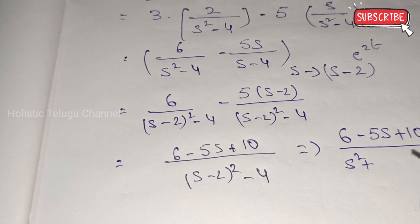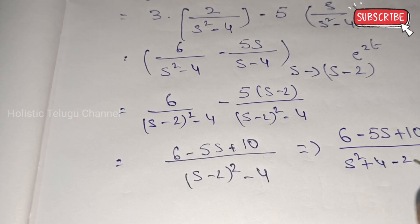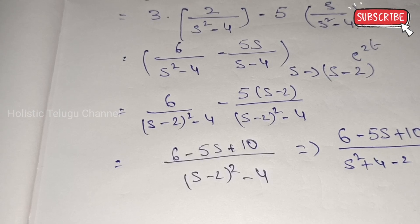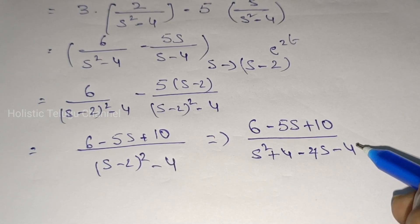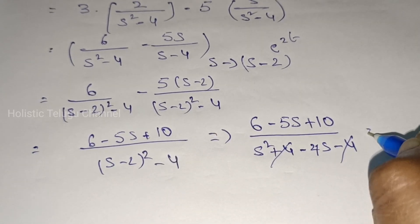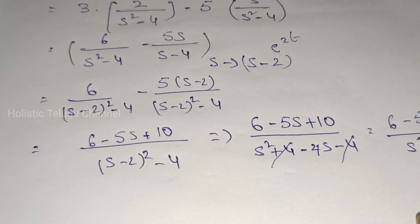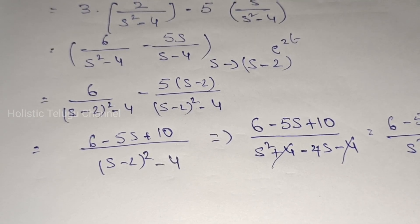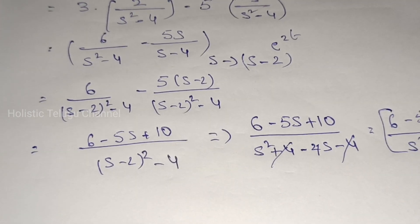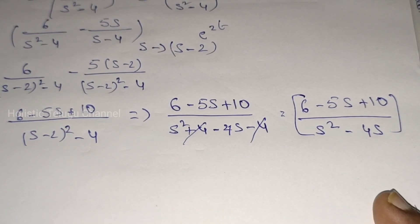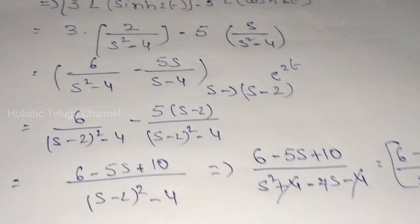Expanding using (A minus B)² formula: A² plus B² minus 2ab gives s² minus 4s plus 4. So the denominator is (s² minus 4s plus 4) minus 4, and the minus 4 plus 4 cancels. The numerator is 6 minus 5s plus 10. Divided by s² minus 4s. So this is our answer. We can simplify further if time permits.